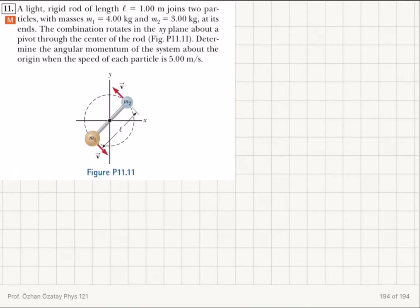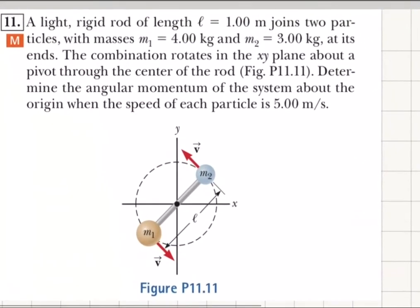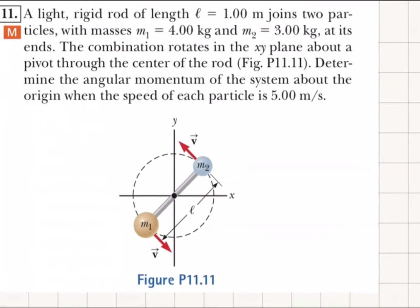Okay, so let's look at an example for angular momentum. This is going to be a simple example. The text says: a light rigid rod of length l equals one meter.